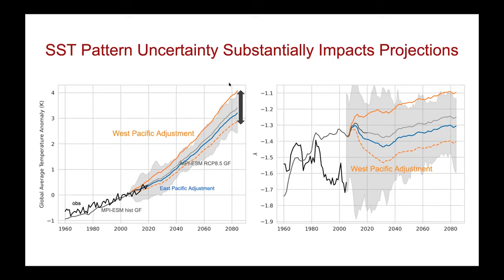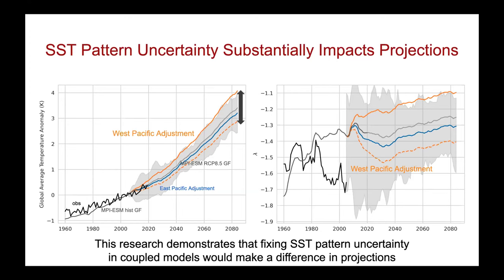Our main conclusion is that SST pattern uncertainty substantially impacts projections to almost the same order of magnitude as internal variability. This research demonstrates that fixing SST pattern uncertainty in coupled models would make a difference in projections.